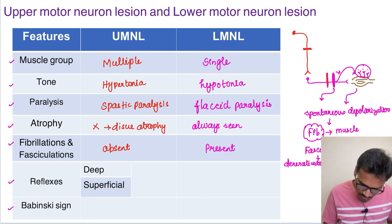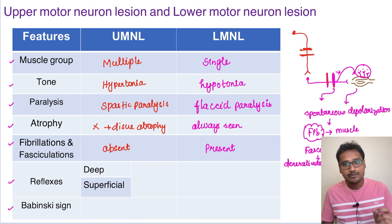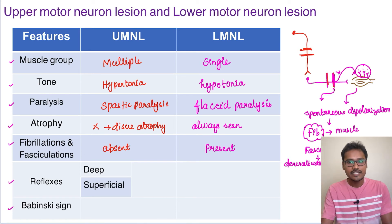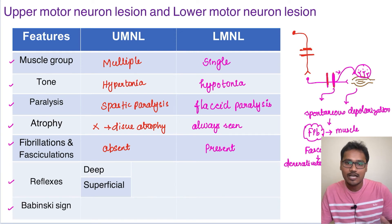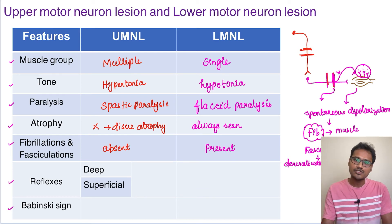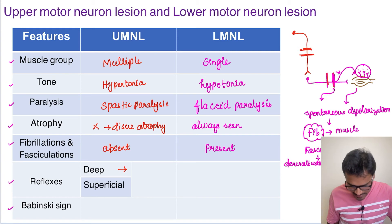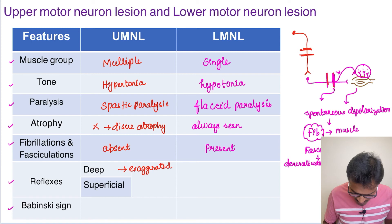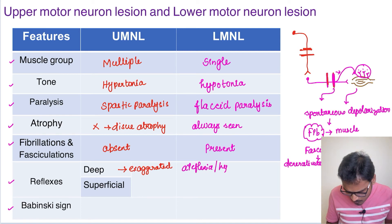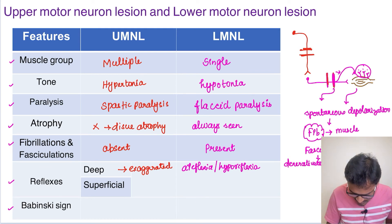Coming to reflexes — in upper motor neuron lesion, since the upper motor neuron is cut, the lower motor will be actively doing all the reflexes and the deep tendon reflexes will be exaggerated. Upper motor normally keeps them under control, but with no controlling influence, striking the tendon will produce a hyperreflexive response — deep reflexes are exaggerated in upper motor neuron lesion. Whereas in lower motor neuron lesion, deep reflexes will be absent — areflexia or hyporeflexia. The superficial reflex, being a polysynaptic reflex, is absent in both upper and lower motor neuron lesions.